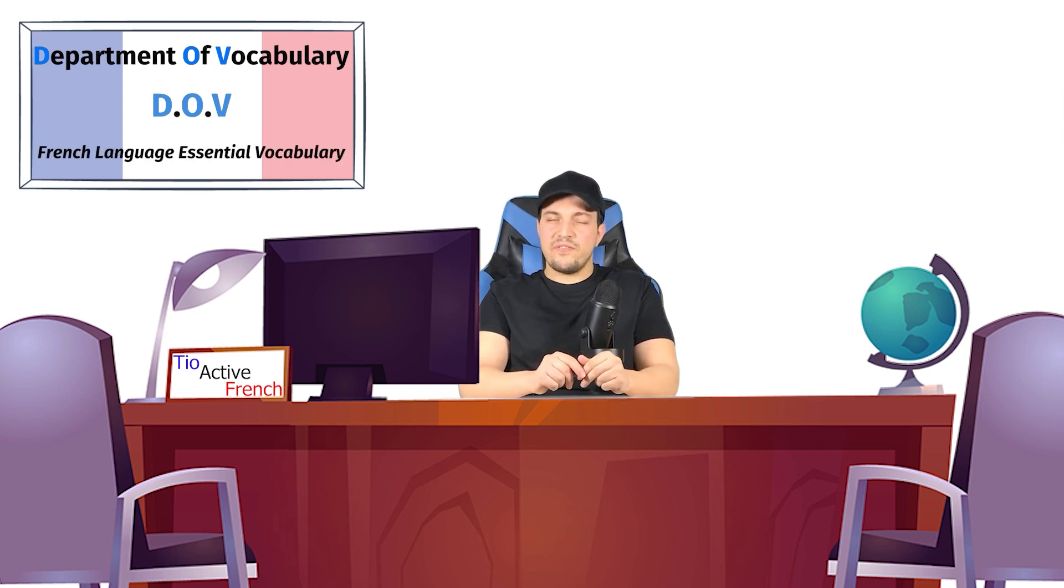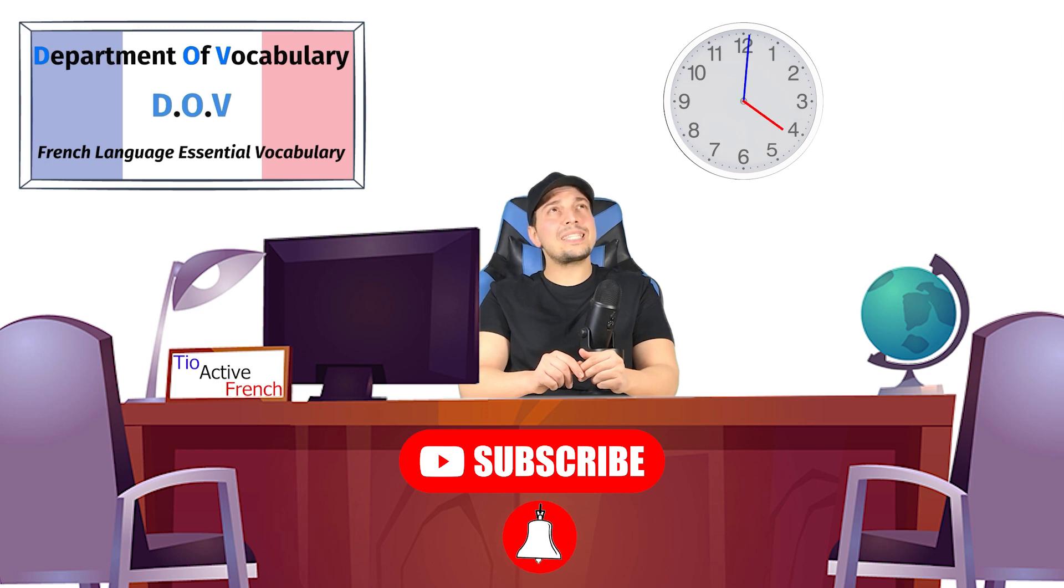Previously we learned numbers from 1 to 100, and today we want to focus on time in French language. What time is it? Well, it's a quarter past five right now, but in French language? I don't know. Let's find out!